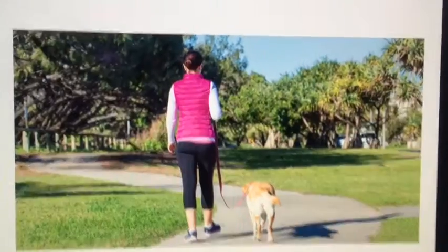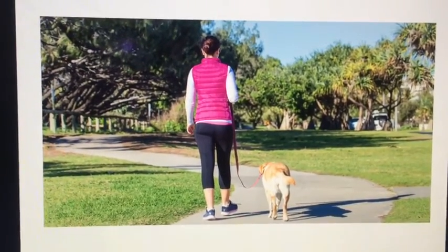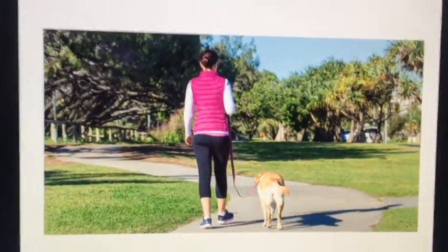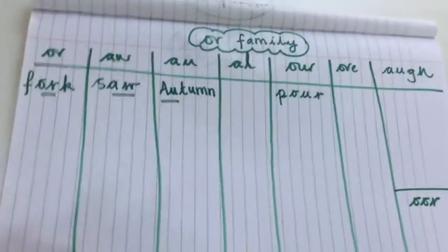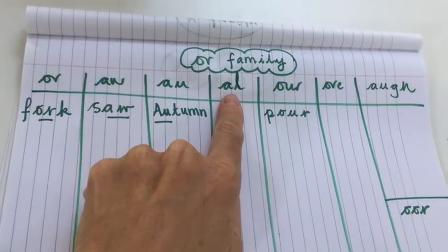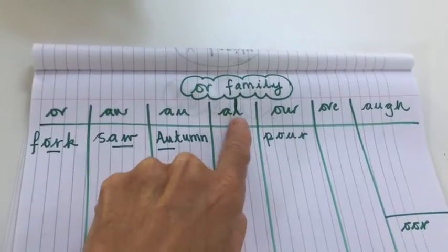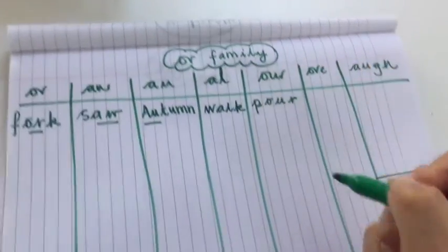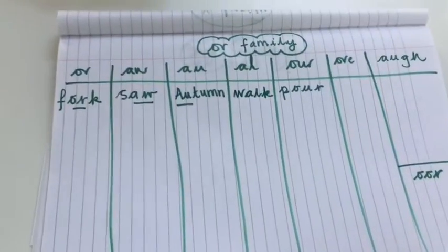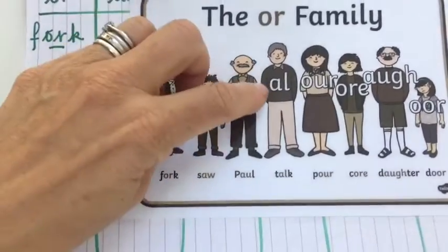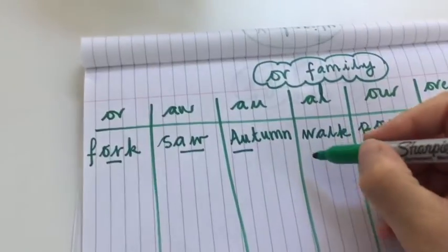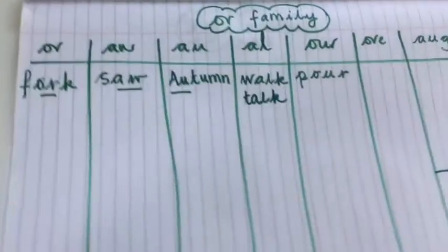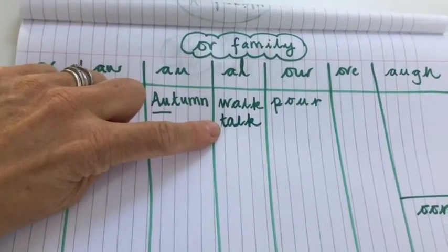That lady is taking her dog for a walk. You can hear the 'or' sound in 'walk' after the 'w.' It's going to go in this column — it's the 'a' and the 'l' together making the 'or' sound. And from the family picture earlier, we also have 'talk' with the same 'al' spelling. Walk and talk — we're all very good at talking in Year One, aren't we?